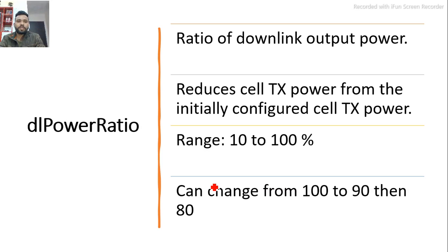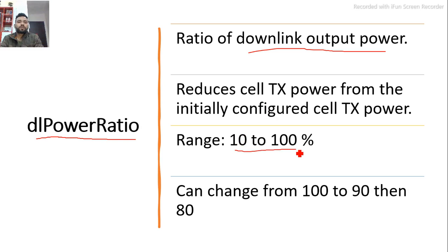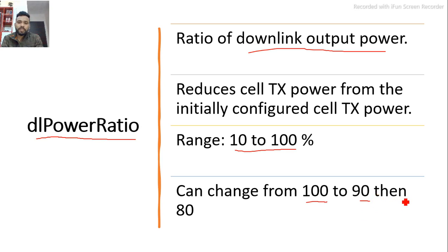The fourth parameter is DL Power Ratio. This is the downlink output power, ranging from 10 to 100 percent. When you log into the Ericsson system and run the command 'get .dlPowerRatio', you can see its value — by default it is typically 100. If users are very high and you want to reduce them, you can reduce the DL Power Ratio from 100 to 90, then 80, then 70, and so on, which will reduce coverage and exclude some users, helping to improve the accessibility KPI.